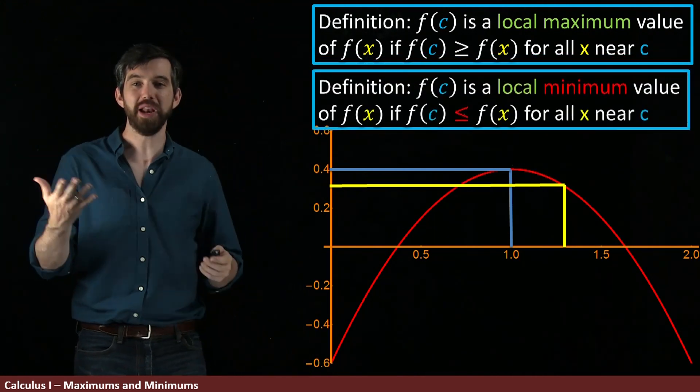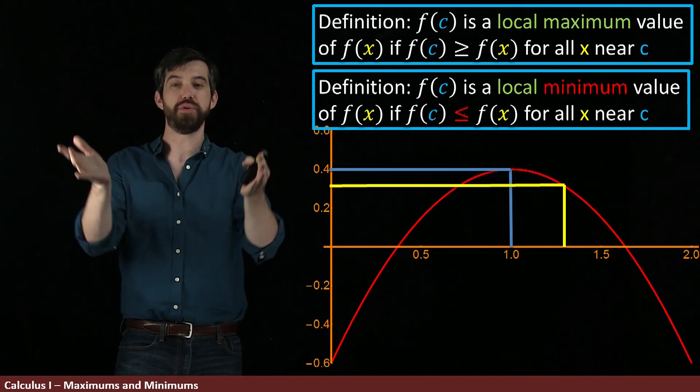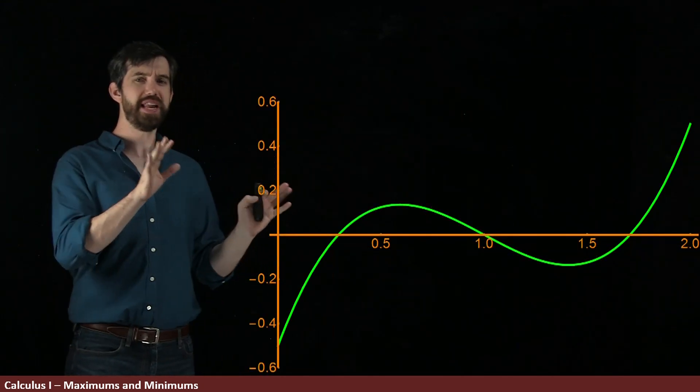Likewise, we've got a local maximum, we can do the same thing for a local minimum. It just changes the sign. Now your f of c is going to be smaller, and for example, you could have an upward facing parabola for a minimum.